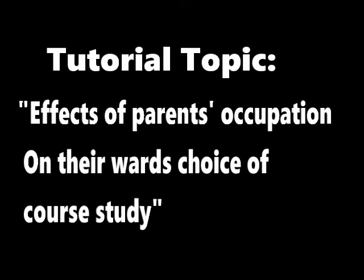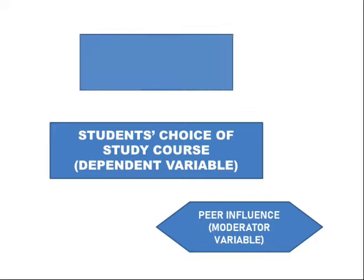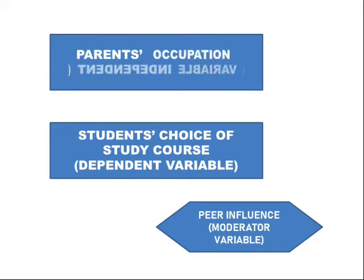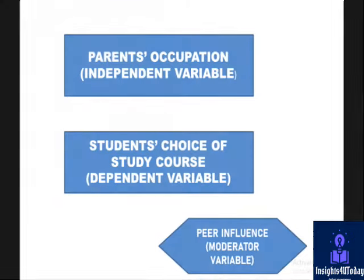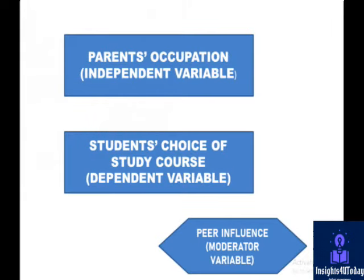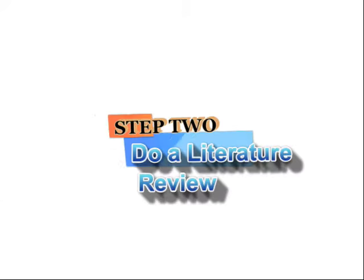Using this example, we will identify the independent variable as parents' occupation, because parents' domain is likely to influence their wards' choice of study course, which is the dependent variable. Remember that a moderating variable could alter the independent variable's effect on the dependent variable. The mediating variable for this topic should be peer influence, because peer influence could affect the possibility of parents' influence on their children's choice of study course.